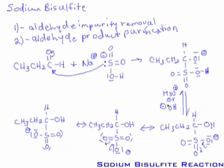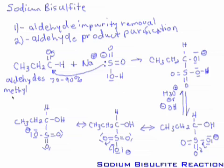The extent of the reaction: for aldehydes, yields are pretty good — somewhere between 70 to 90%. Ketones are more difficult. The best you can do is methyl ketones, and the yields are not great — between 12% and 56%. Other ketones don't react, and this has to do with steric effects: as it gets bulkier, it's harder to get the bisulfite to act nucleophilically.